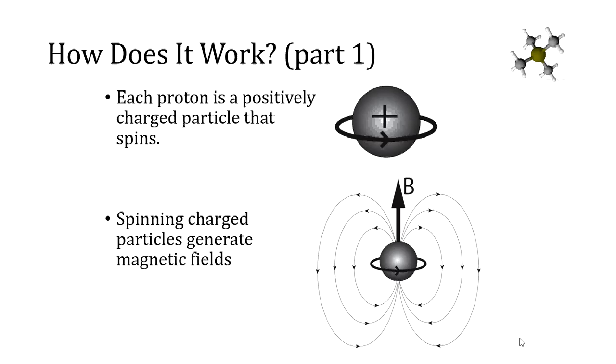Individual protons might not spin in a way that we can recognize in our macroscopic world, but they have some property that behaves like spin, and I'm representing that spin with a continuous circular arrow that goes around the equator of the proton. You may have taken courses in physics or learned about electricity and magnetism, and you might know that spinning particles or even moving charged particles generate magnetic fields. But if you haven't heard that before, I'm going to say it again: moving charged particles generate magnetic fields.